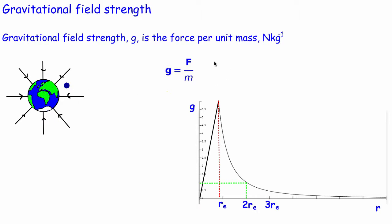However, sometimes we don't know the weight of an object. But there is a way we can work out the gravitational field strength just from knowing, for example, the mass of the Earth. In the first video on gravitational fields, we saw that Newton said the force of attraction between two objects was given by F = GMm/r². Here, capital M is the mass of the planet, little m is the mass of the object placed in the gravitational field, and R is the distance from the centre of the planet to the object.